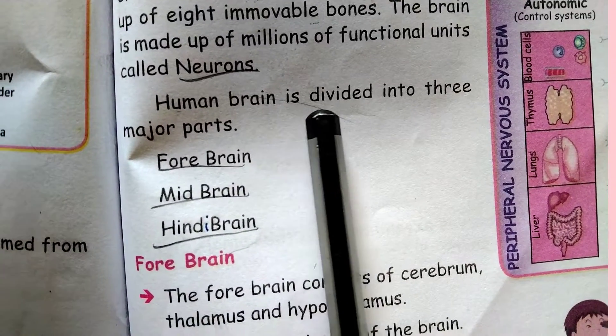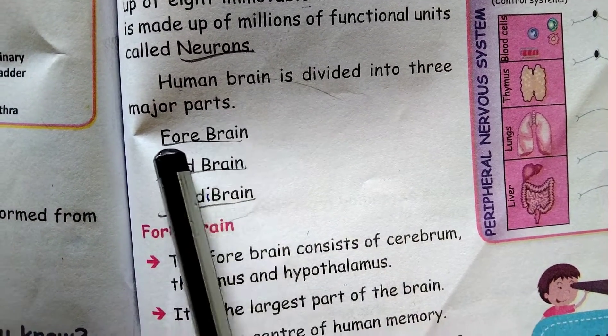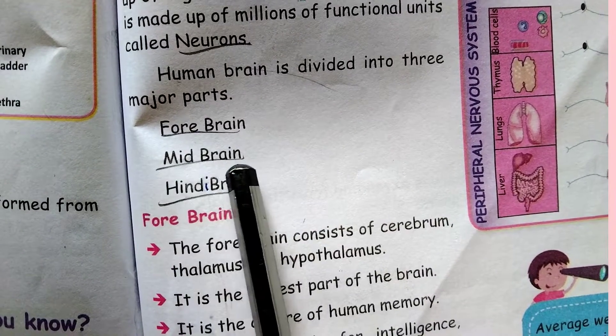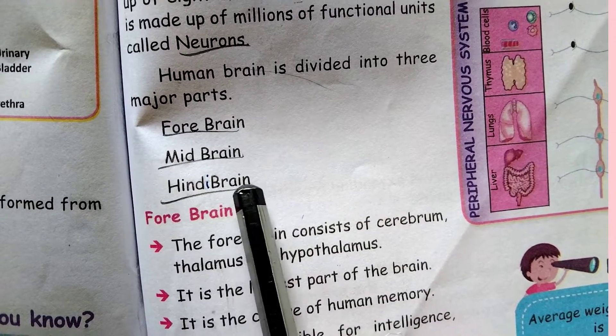The human brain is divided into three major parts: forebrain, midbrain, and hindbrain.